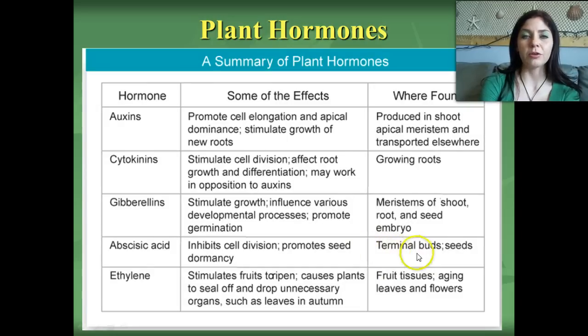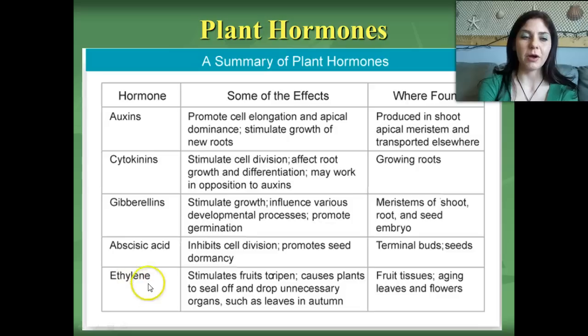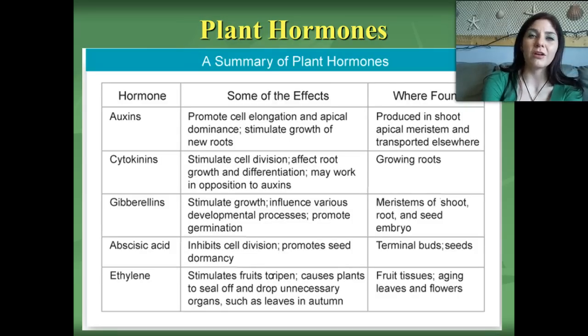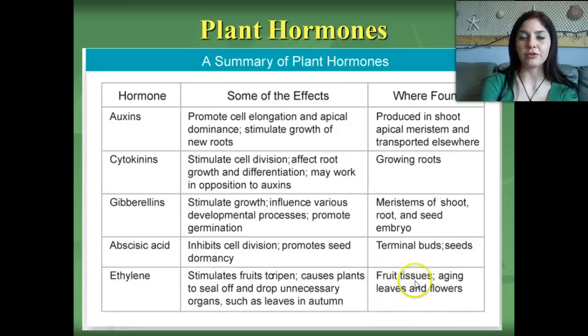The last type of hormone is ethylene, which stimulates fruit ripening and causes plants to seal off and drop unnecessary organs such as leaves in autumn. Ethylene is responsible for the gorgeous leaf color changes you see in fall. This hormone is found in fruit tissues, aging leaves, and flowers. That concludes our discussion of plant reproduction and hormones — stay tuned for plant tropisms.